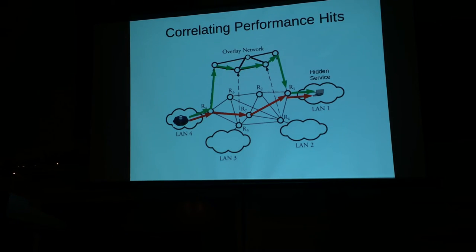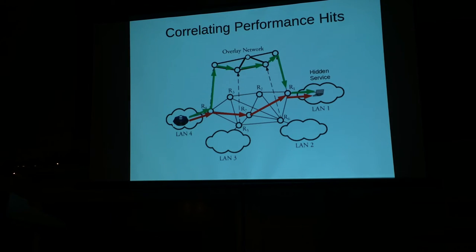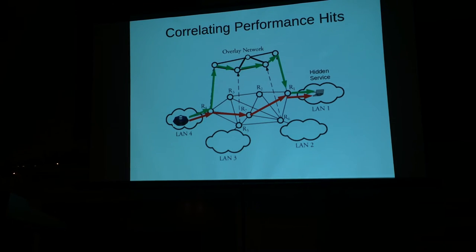The second attack is correlating performance hits. You can figure out what the performance hits look like if somebody has a bad day — say they're on a microwave connection and a plane flies in between. If you can watch both a dual-homed site's internet presence and their Tor presence, you can send enough traffic to their Tor to get a heartbeat. If you think you know who a site is, you might induce a denial of service attack and watch it go down in both the real world and Tor simultaneously. The downside is it's really obvious to the victim.